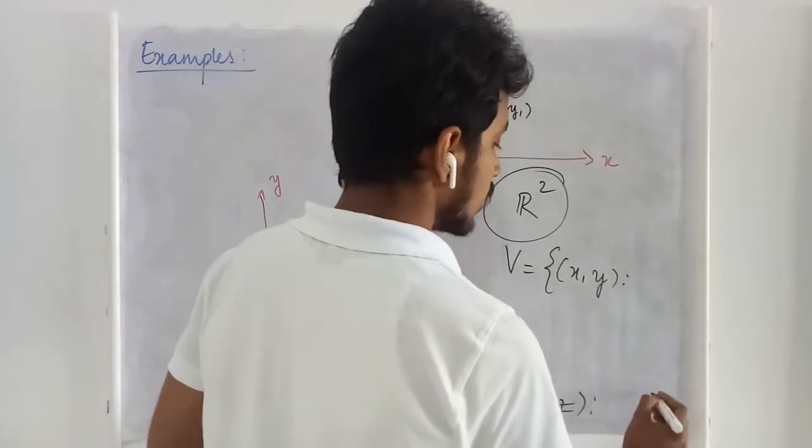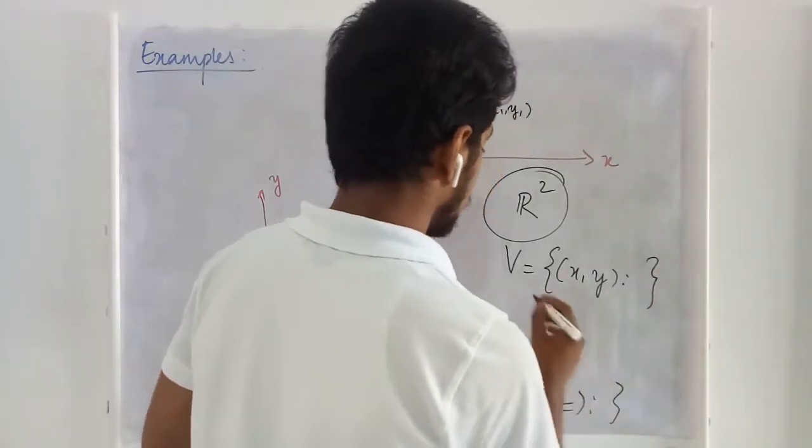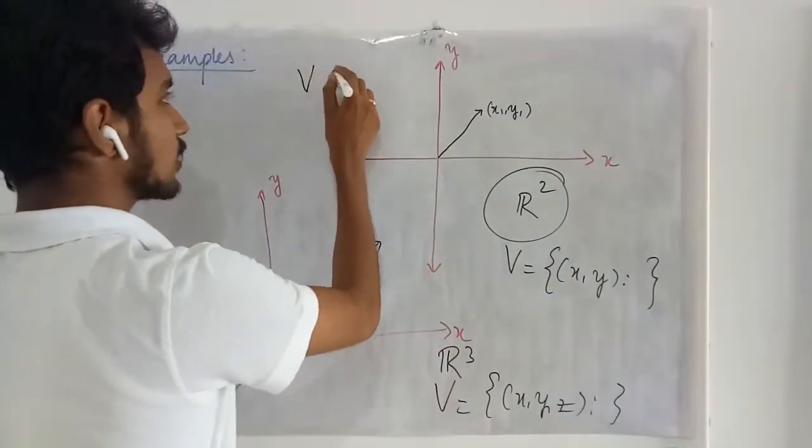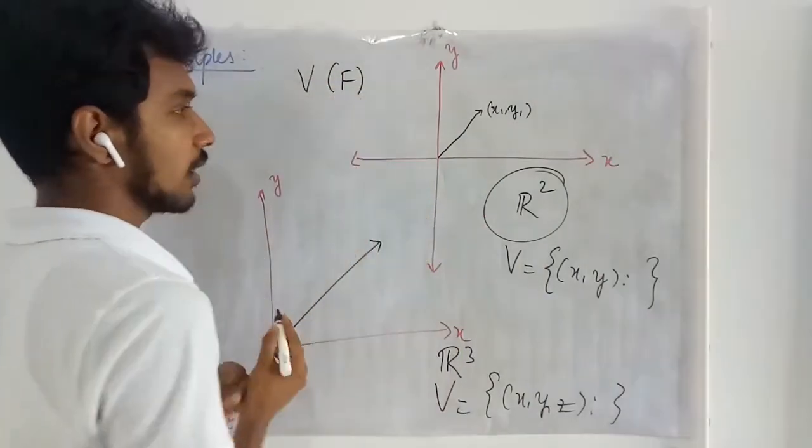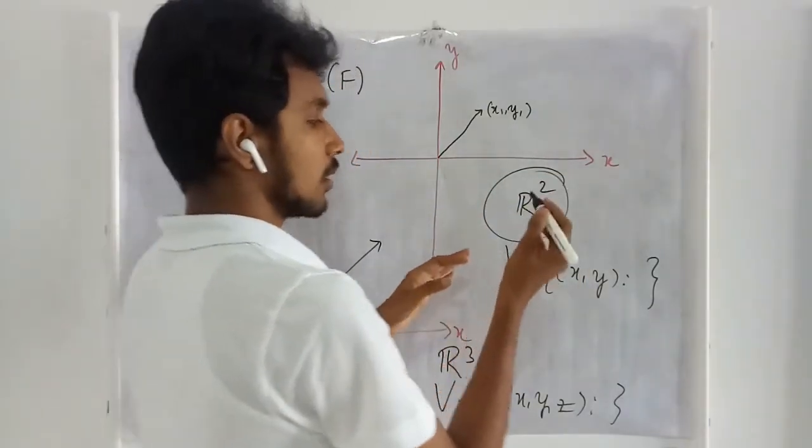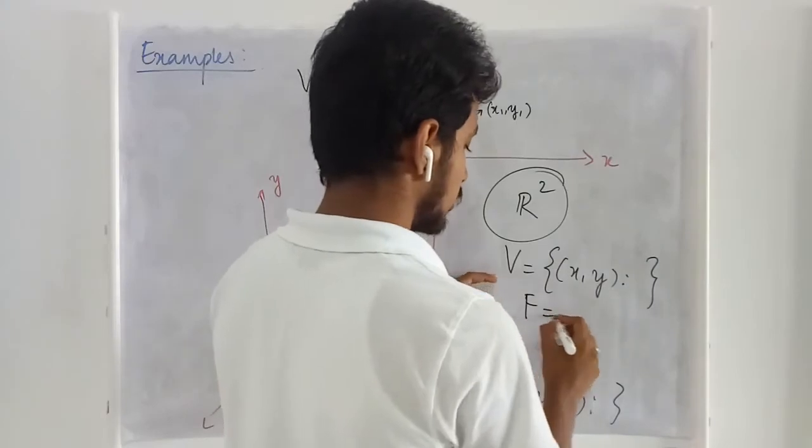Then what is the over field? Here whenever we write something as a vector space we write vector space over a field F. What can be the field here? To the maximum the field considered here can be set of real numbers R.